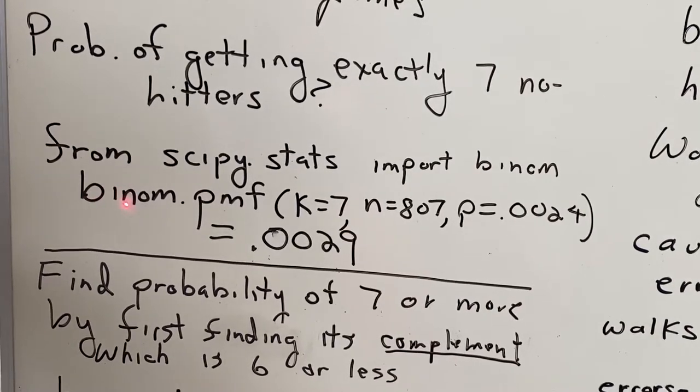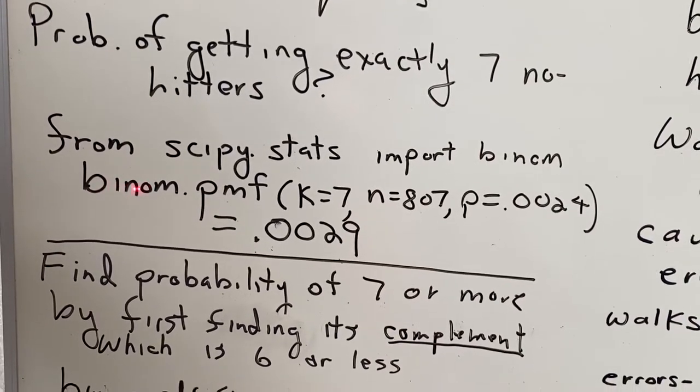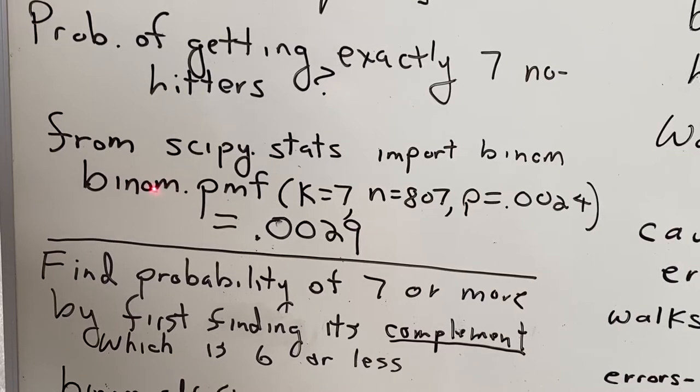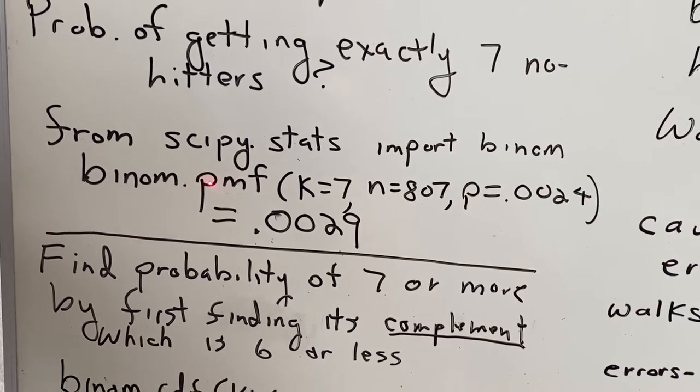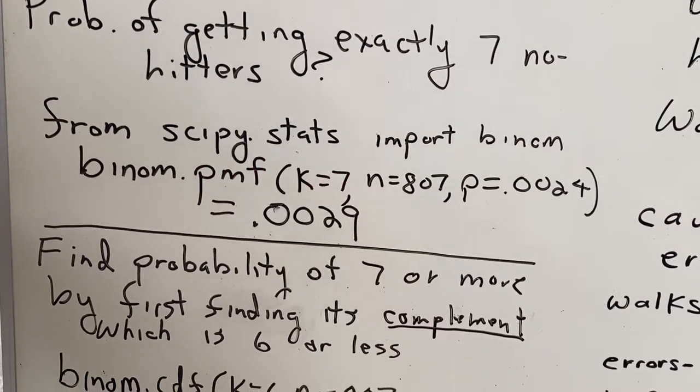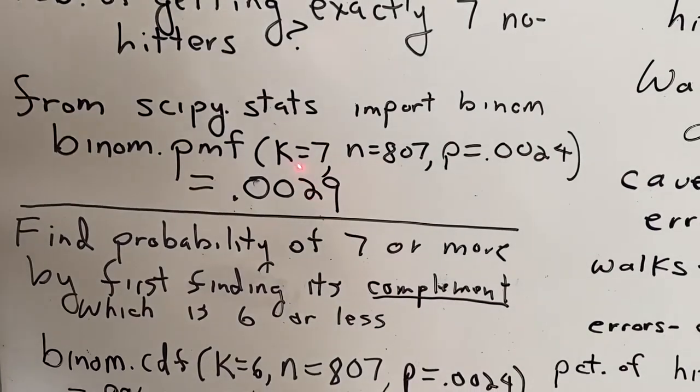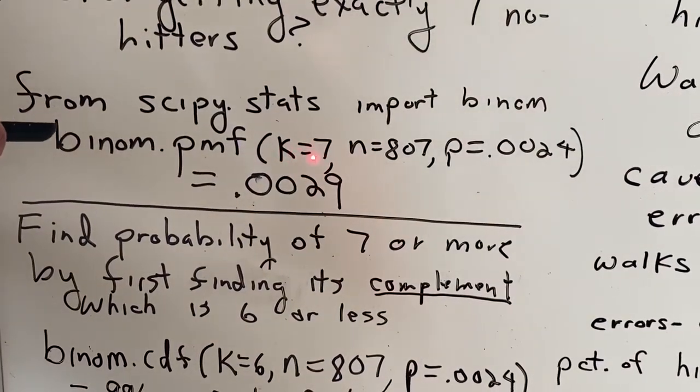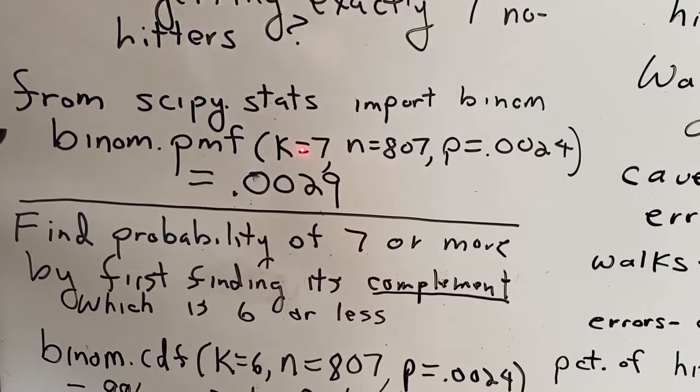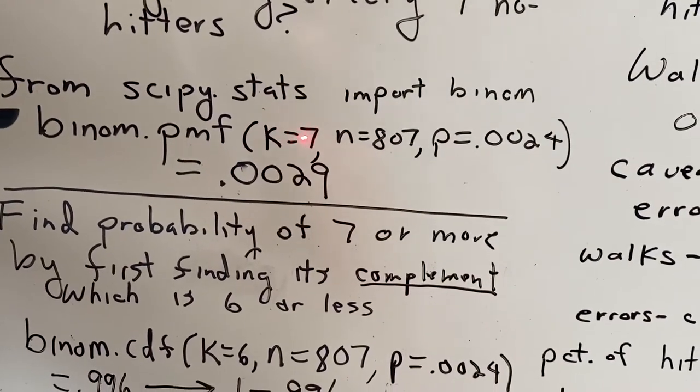And then the second line says binom, that's B-I-N-O-M for binomial, dot PMF, which stands for probability mass function. K equals 7, N equals 807, P equals 0.024. So K equals 7, when you think in terms of binomial, think of successes and failures. We can think of that as 7 successes.